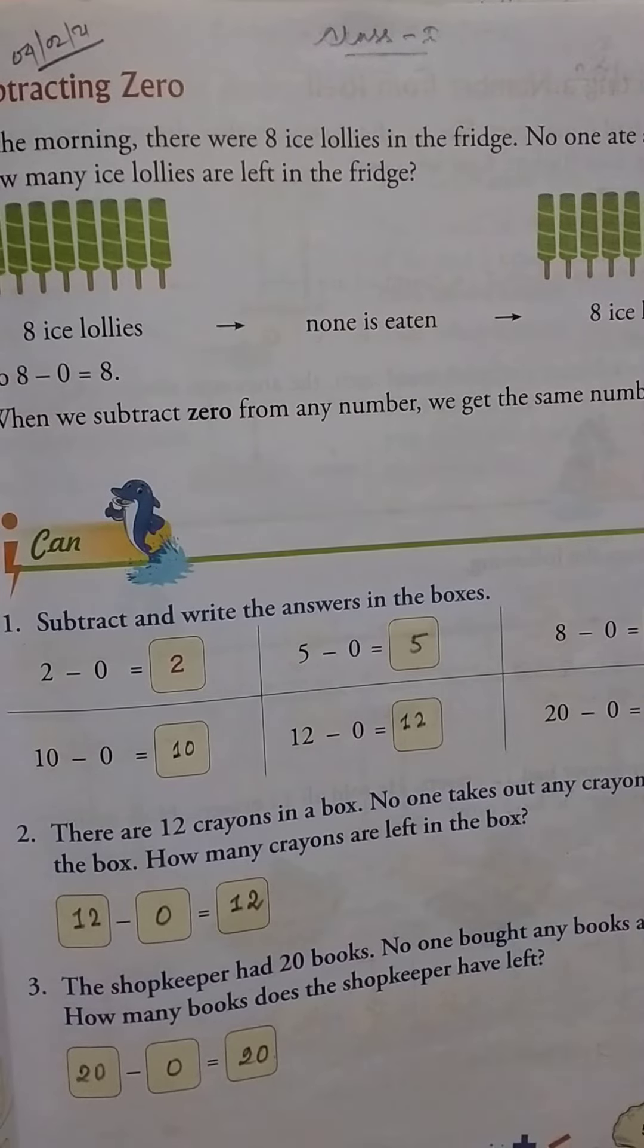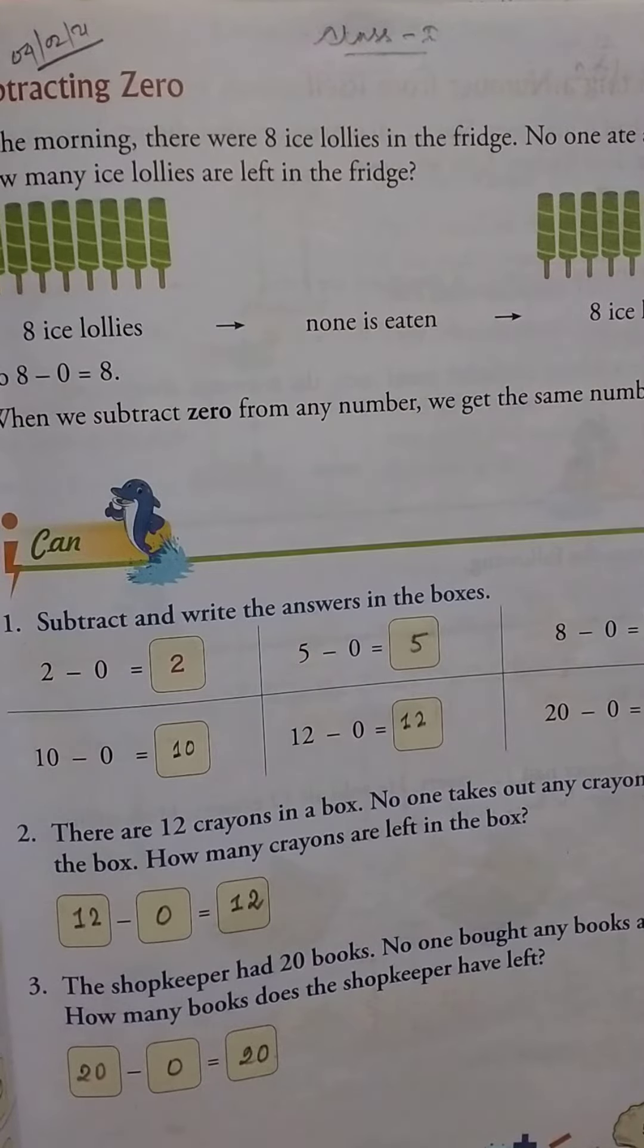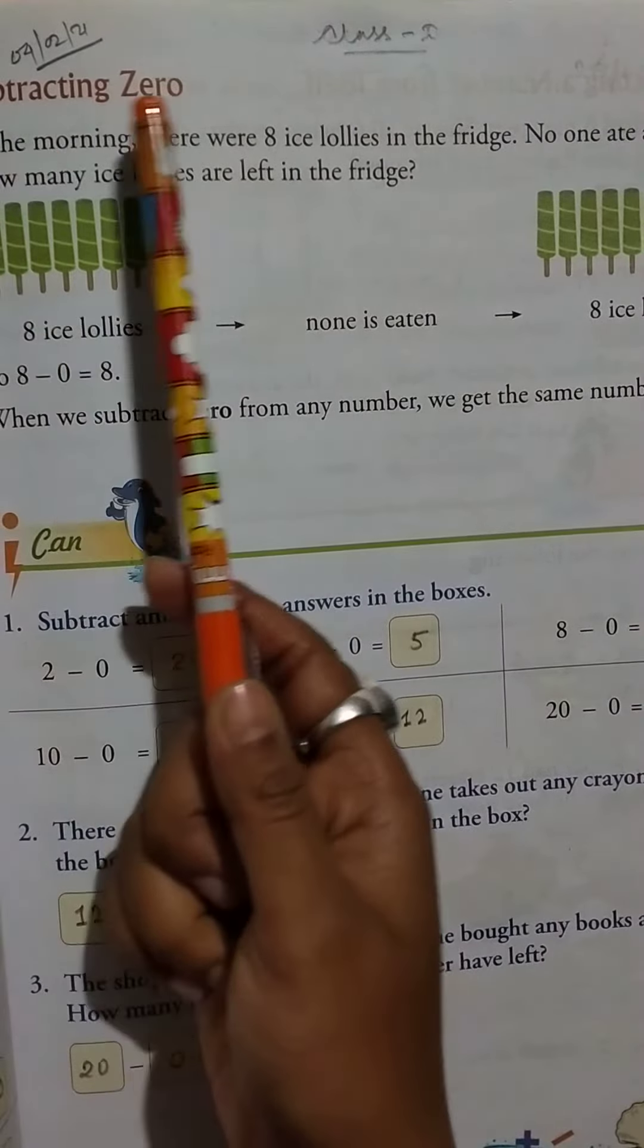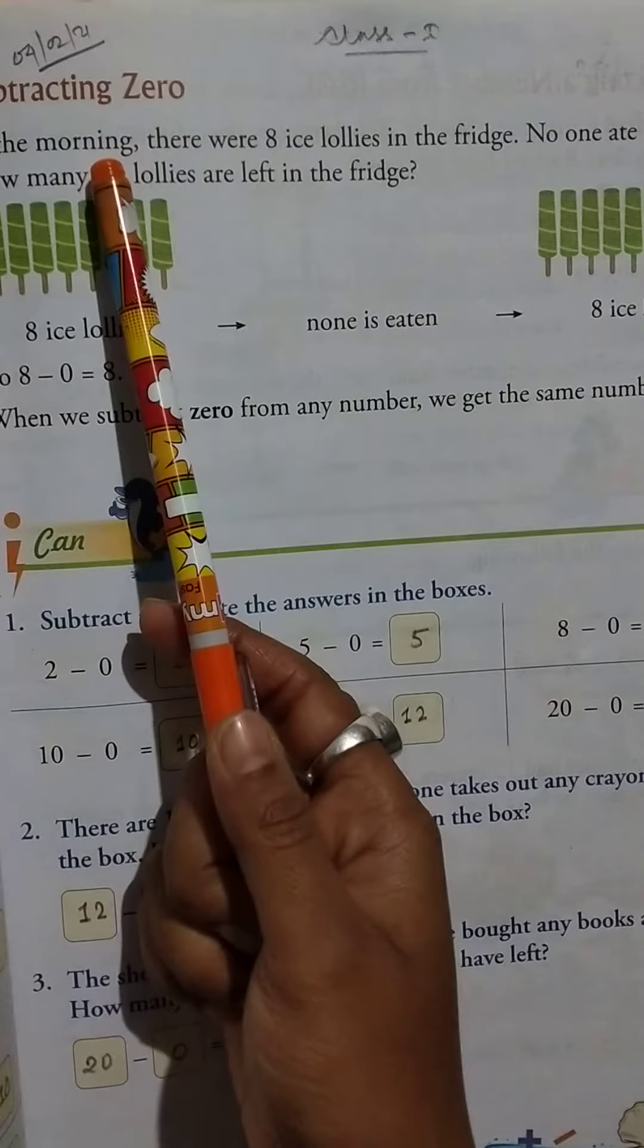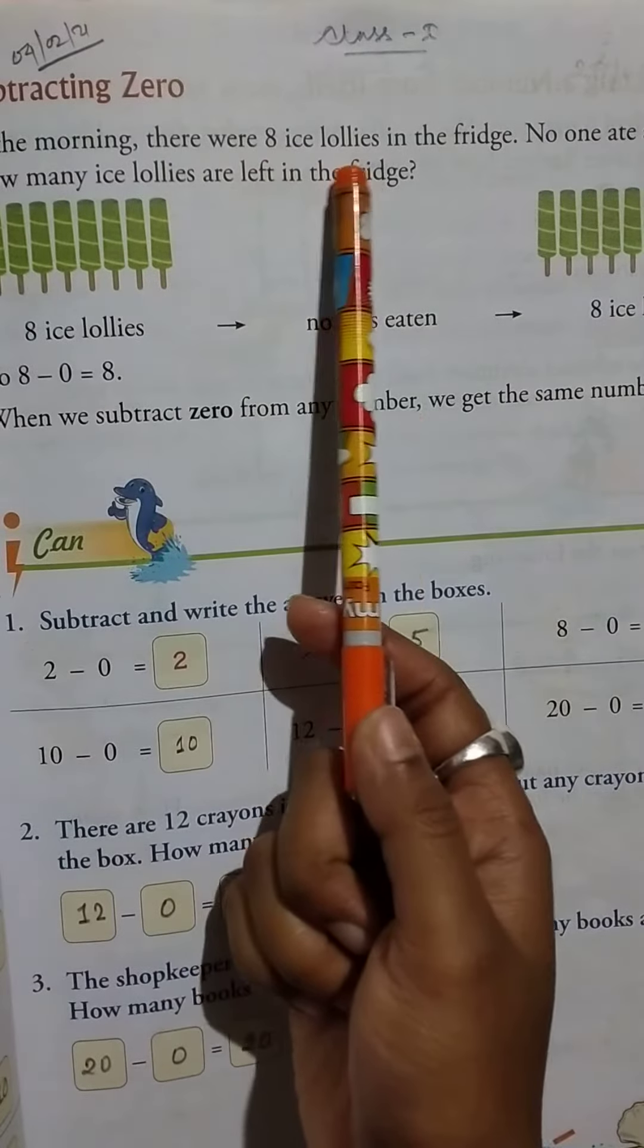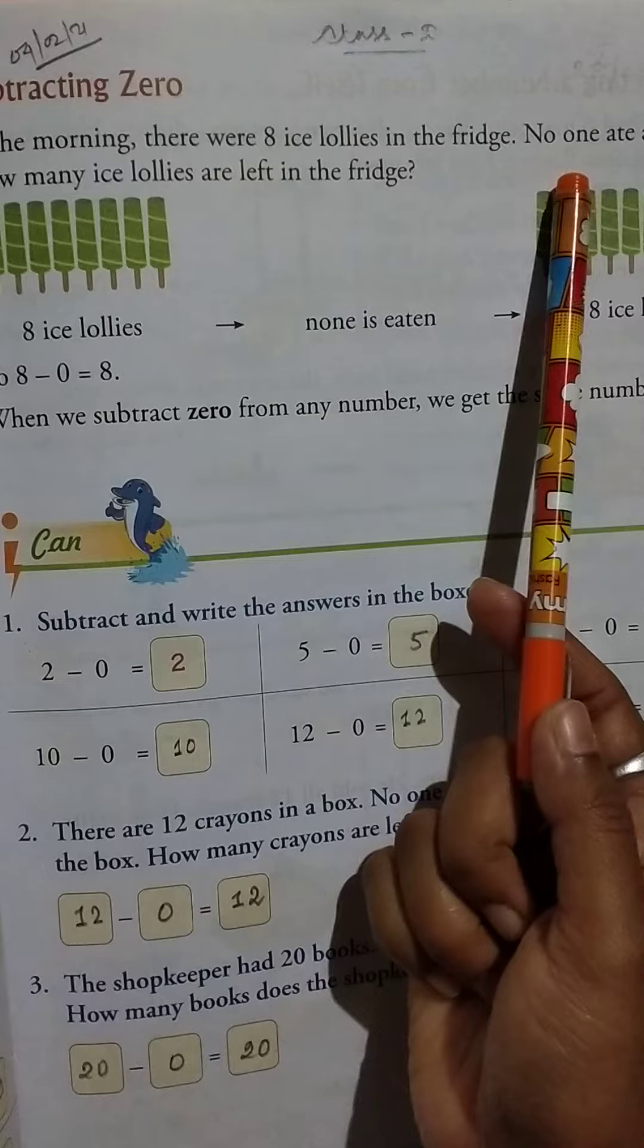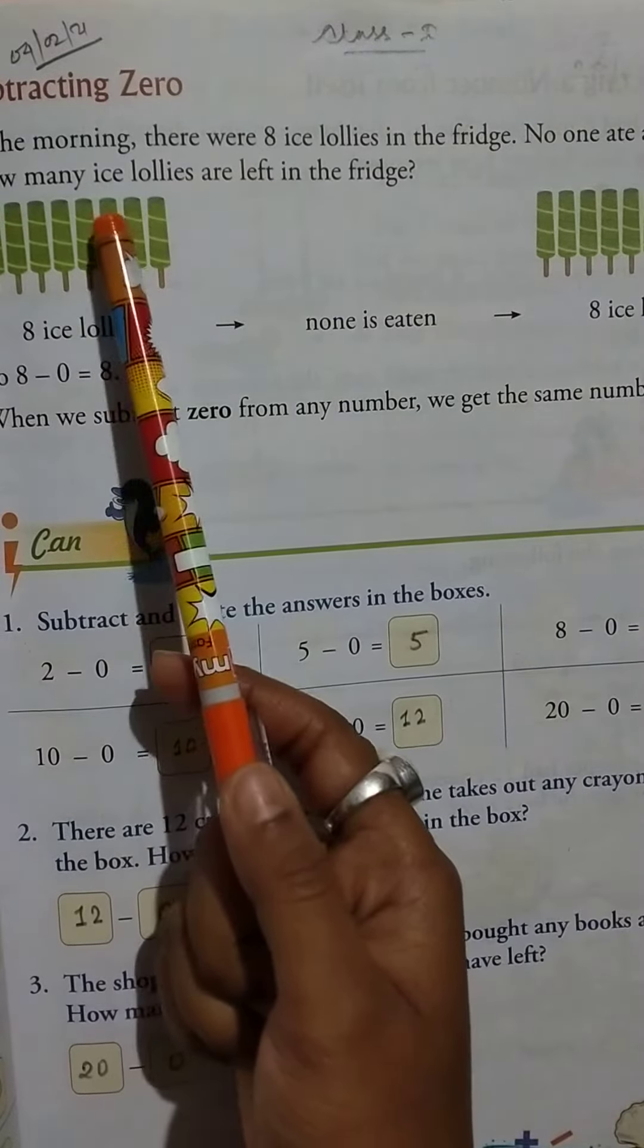Hello students, good morning. Class One Mathematics, date 4th of February 2021. Today's topic: subtracting zero. In the morning there were eight ice lollies in the fridge. No one ate any. How many ice lollies are left in the fridge?